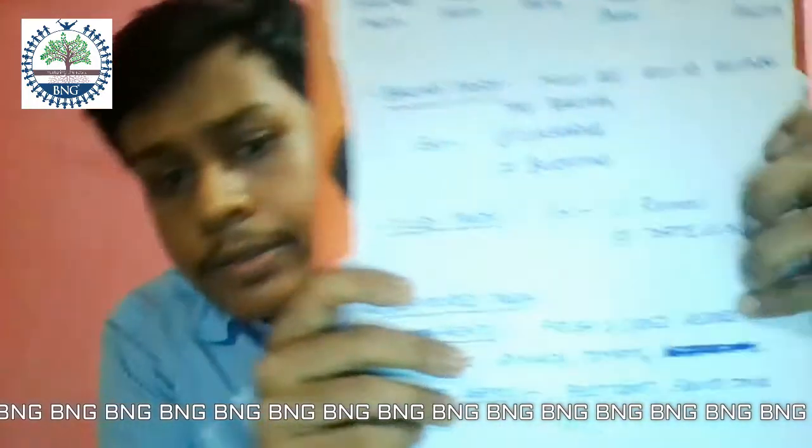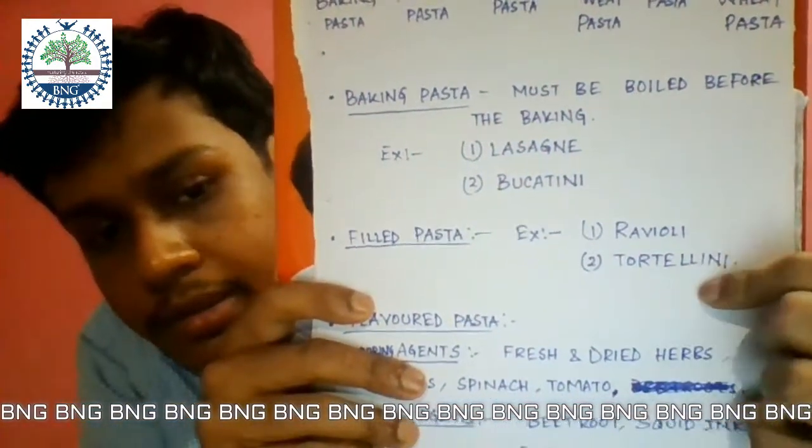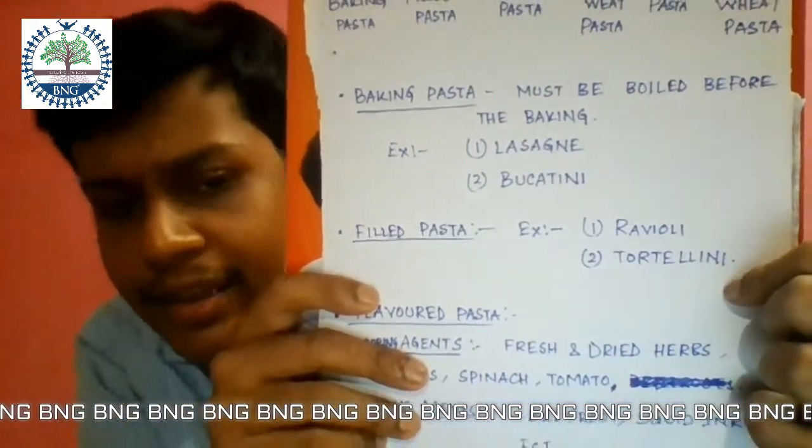Examples of filled pasta are ravioli, tortellini, etc. Next, flavoured pasta. In the case of flavoured pasta, there are some colouring agents and flavouring agents which are used for flavouring the pastas.